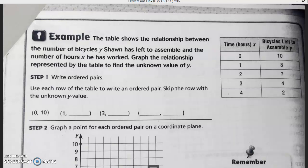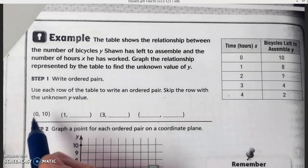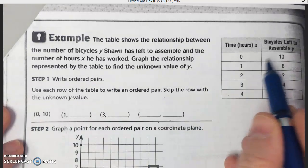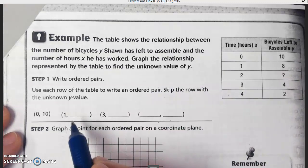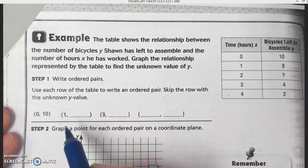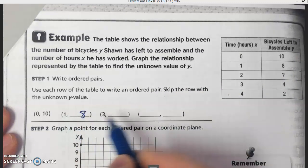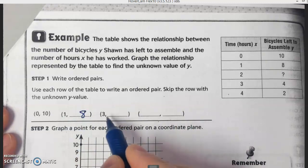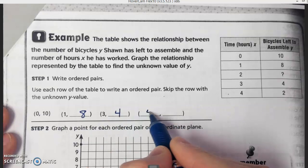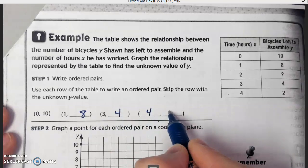After one hour, we have eight left to assemble, and so forth. My first ordered pair is zero, ten. My second ordered pair would be one eight. When X is three, what would Y be? And then when X is four, Y is two.